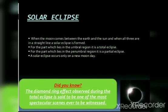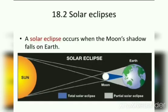Do you know, the diamond ring effect observed during the total eclipse is said to be one of the most spectacular scenes ever to be witnessed. This is the diagram of solar eclipse. Solar eclipse occurs when the moon's shadow falls on the earth. As you see in the diagram, the moon comes in between the sun and the earth. The greenish part is called total solar eclipse and the grayish part is called partial solar eclipse.